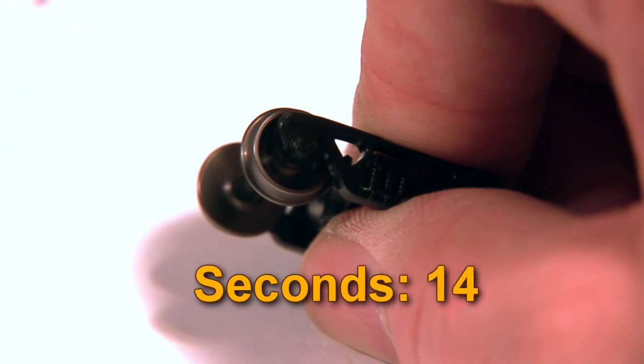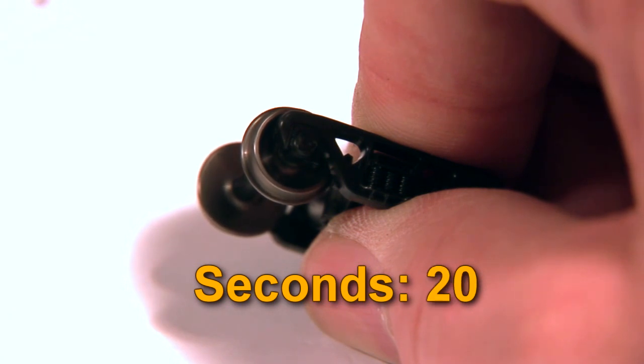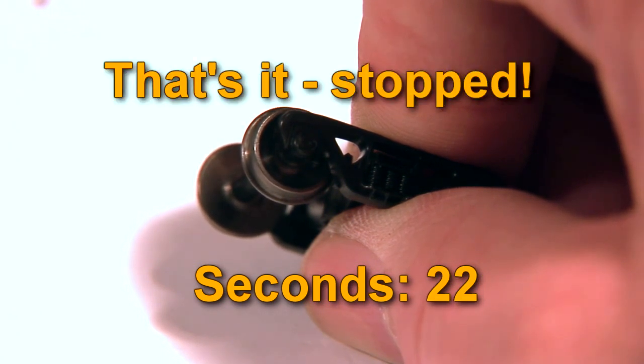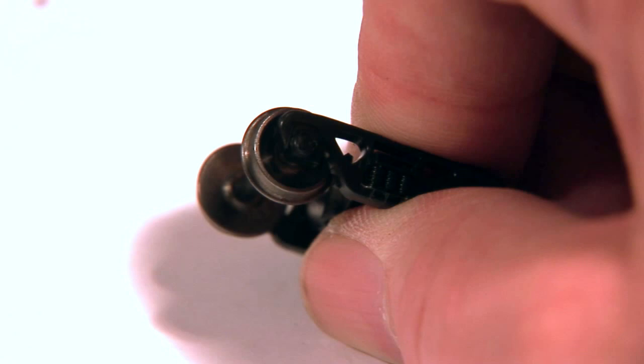Yep! They're still spinning! They're slowing down! Wow! 22 seconds! This proves minimal side-to-side slop does not have to hinder rollability.